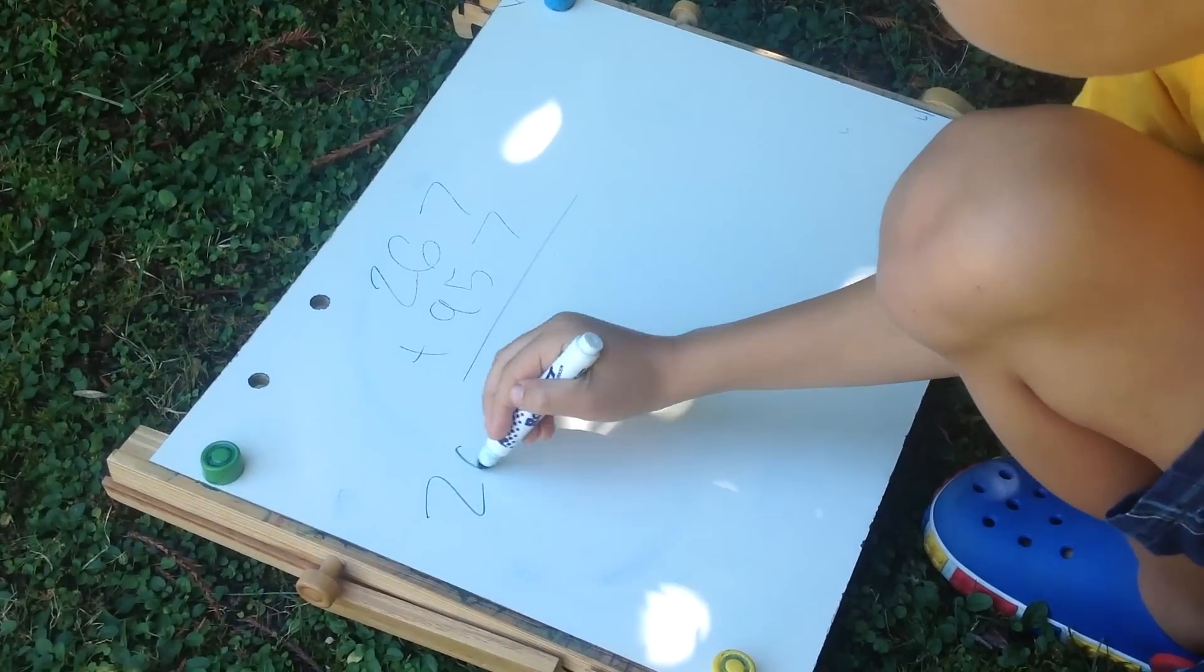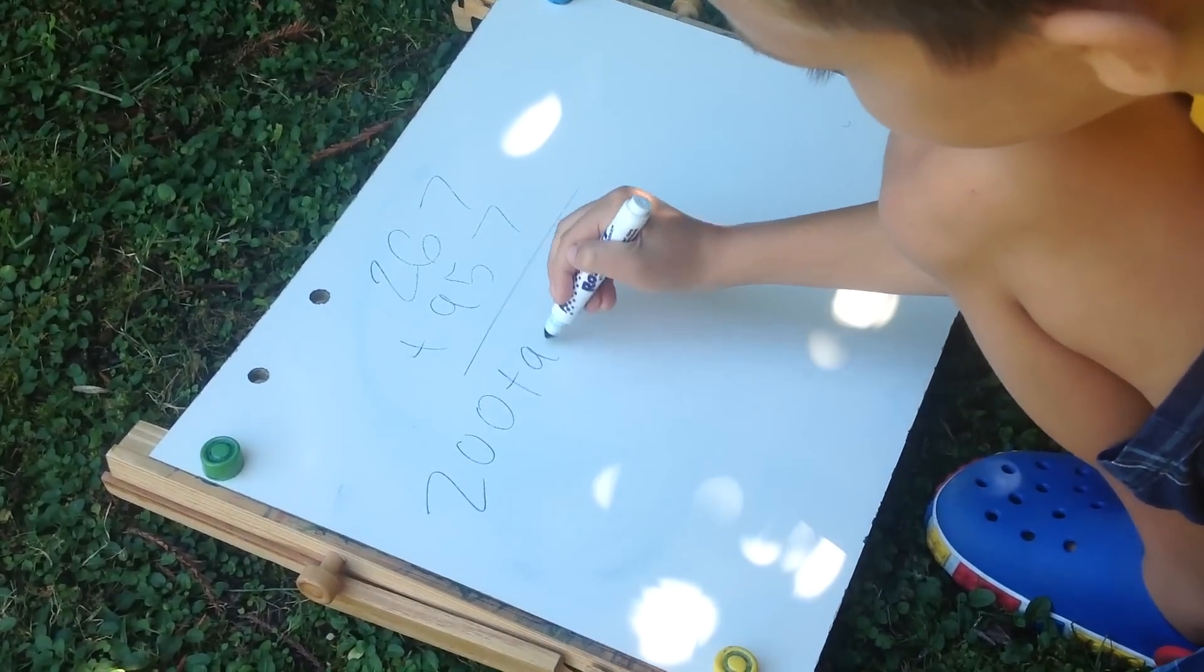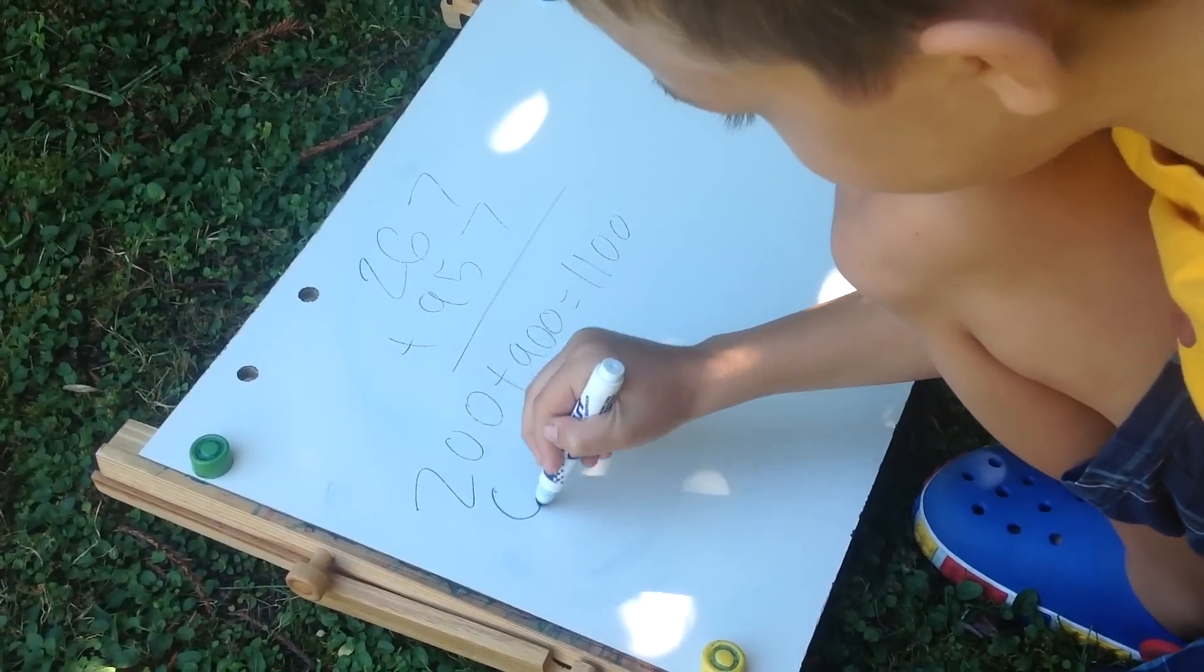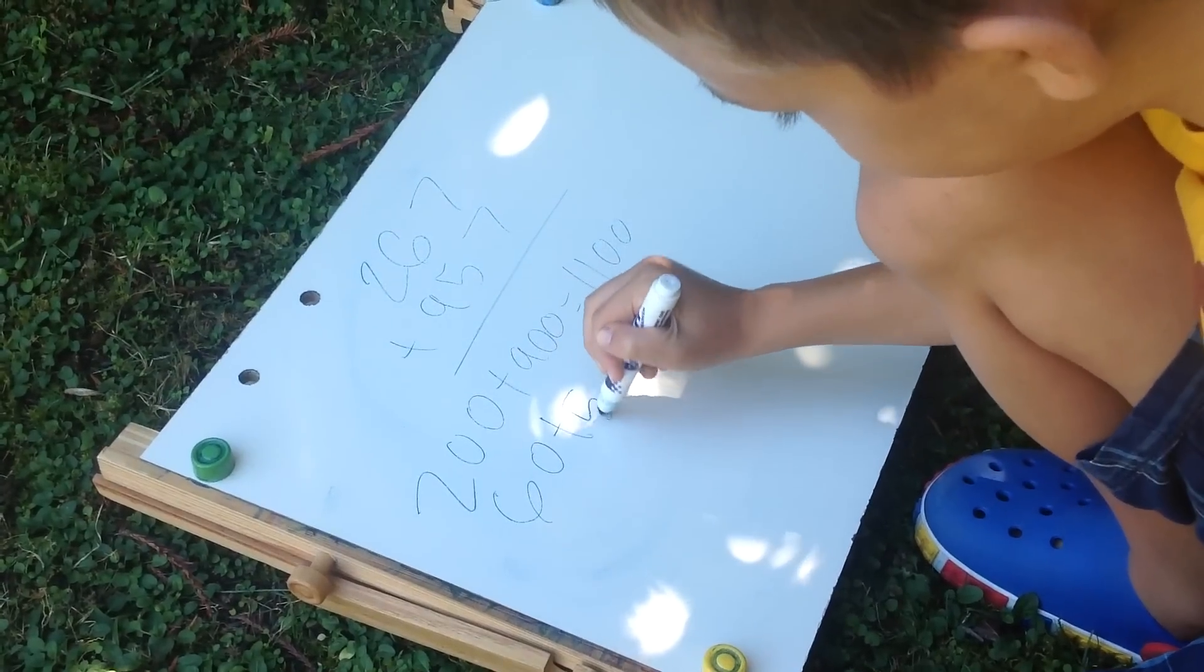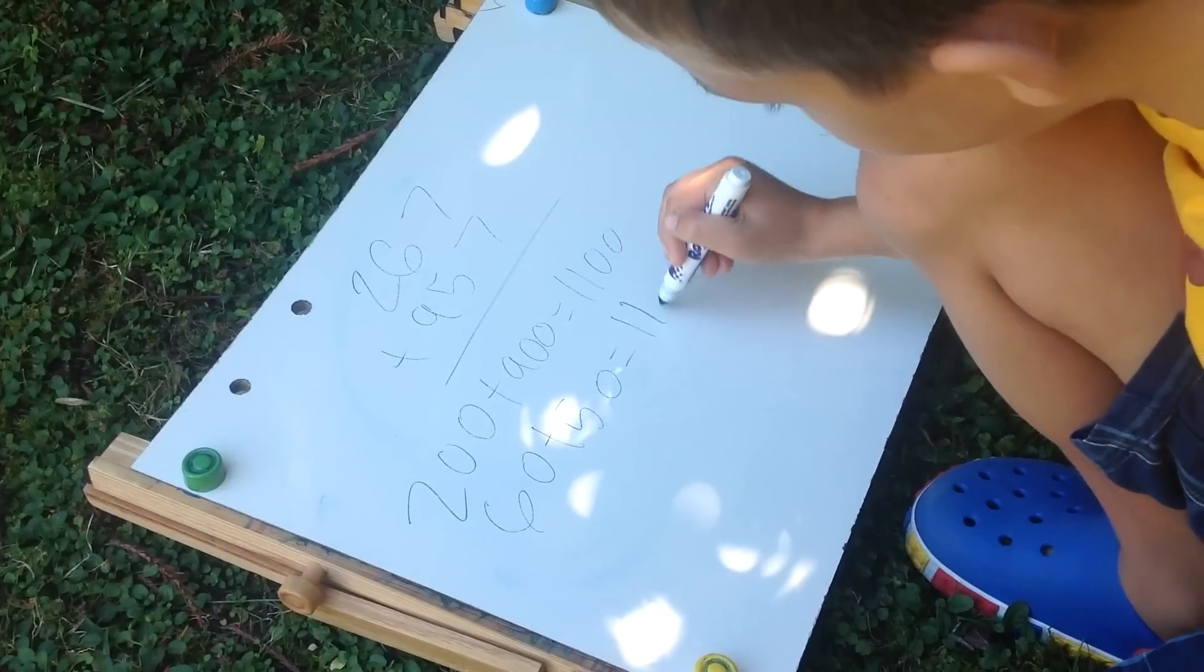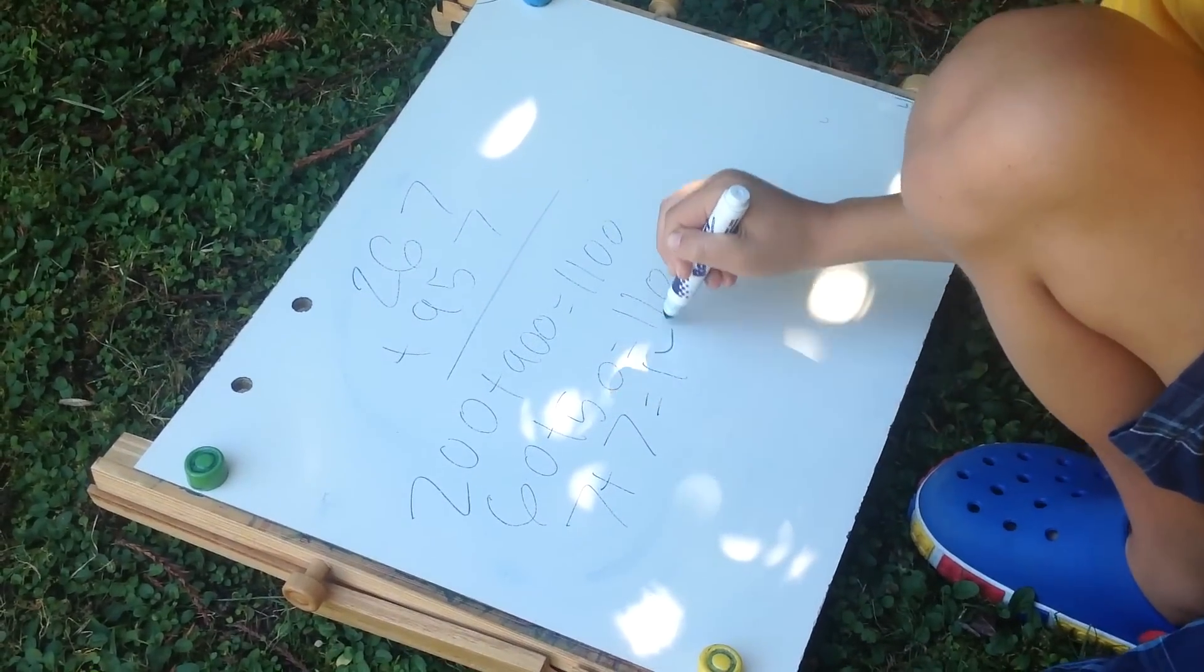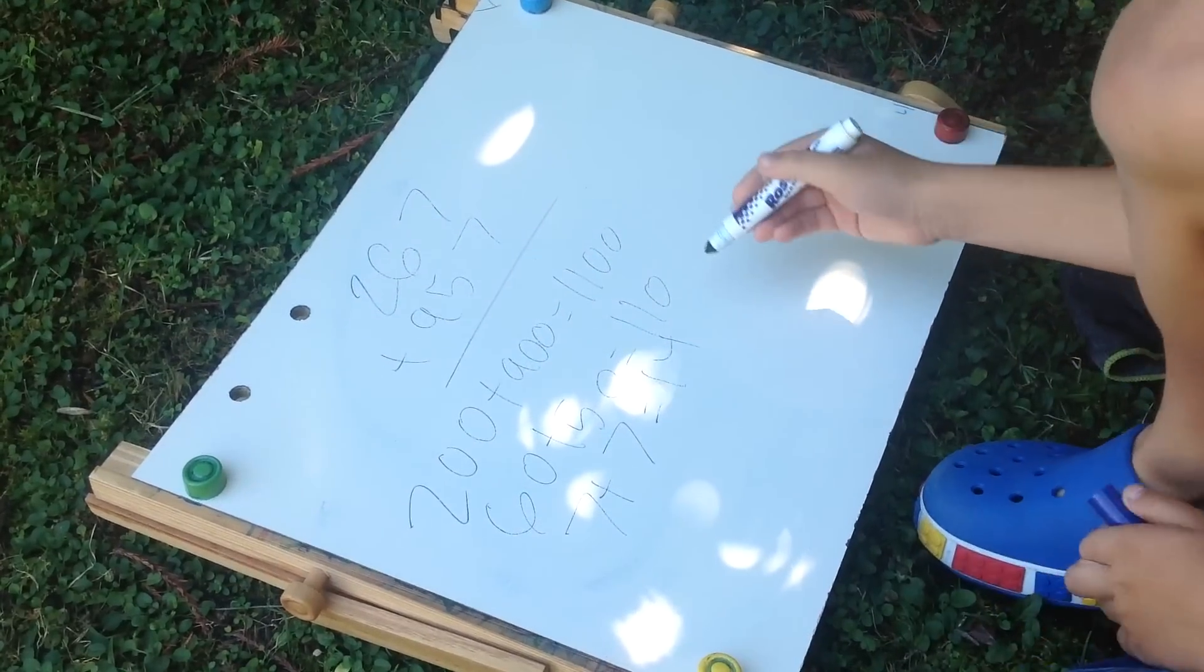Now 200 plus 900 is 1,100. 60 plus 50 is 110. 7 plus 7 is 14. Now we add these numbers.